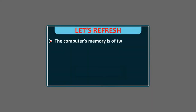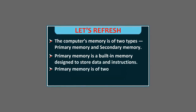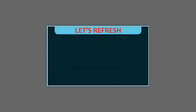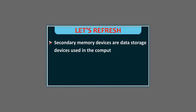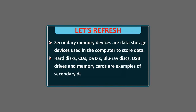Let's refresh. The computer's memory is of two types: primary memory and secondary memory. Primary memory is a built-in memory designed to store data and instructions, and is of two types: RAM and ROM. Secondary memory devices are data storage devices used in the computer to store data. Hard disks, CDs, DVDs, Blu-ray disks, USB drives and memory cards are examples of secondary data storage devices.